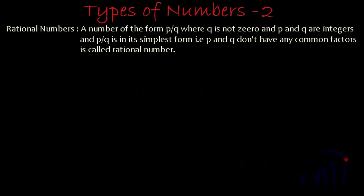The definition says a number of the form P by Q where Q is not zero — that means the denominator of the fraction P by Q is not zero — and P and Q are integers. Both P and Q have to be integers, and P by Q is in its simplest form, that is P and Q don't have any common factors. This is called a rational number.